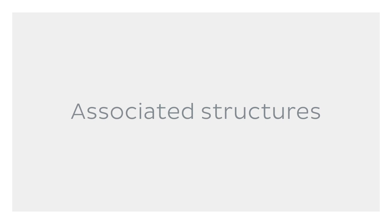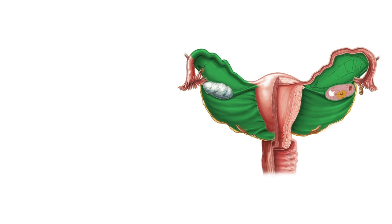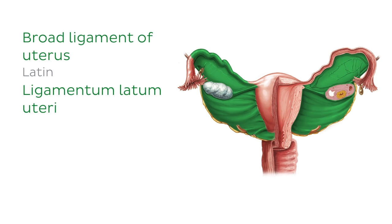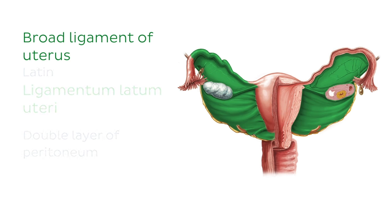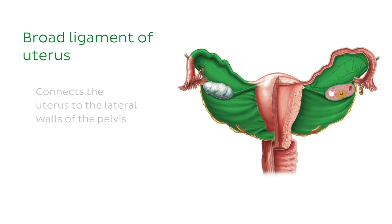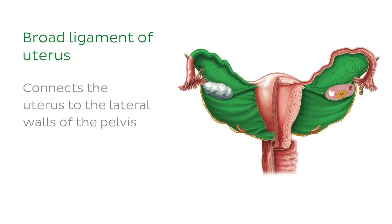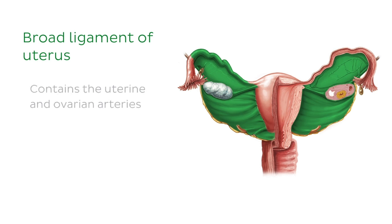Now it's time to have a brief look at some associated structures of the uterus. The first structure is the broad ligament of the uterus, which is a double layer of peritoneum. This ligament connects the uterus to the lateral walls of the pelvis and contains the uterine and ovarian arteries.